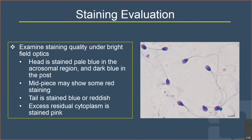Examining staining quality under bright-field optics: the sperm head should be stained pale blue or lavender, and the acrosomal region should be dark blue or dark lavender in the post-acrosomal region. The midpiece shows some red staining, and excessive residual cytoplasm around the midpiece will also be stained pink. An example from our lab with Diff-Quik staining shows clear demarcation and differentiation of the spermatozoa.